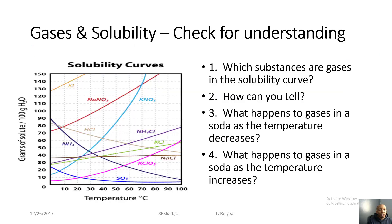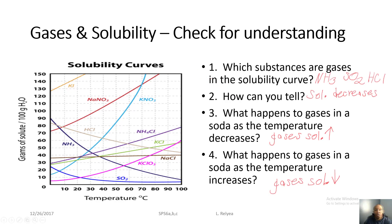Now let's do a check for gases and solubility. You have two minutes to look at the following solubility curve and answer the questions. Number one: which substances are gases in the solubility curve? Three substances have a rate of solubility that is actually decreasing — those are HCl, NH₃, and SO₂.